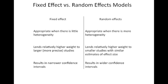To sum up, a fixed effect model is appropriate when there is little heterogeneity while a random effects model is appropriate when there is more heterogeneity. A fixed effect model lends relatively higher weight to larger and more precise studies, while a random effects model lends relatively higher weight to smaller studies with similar estimates of effect size. A fixed effect model results in a narrower confidence interval, and a random effects model results in a wider confidence interval.